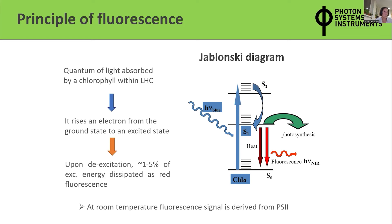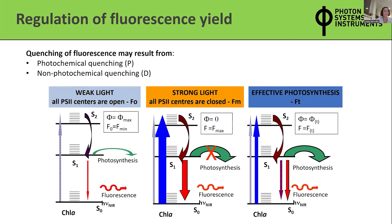Here we have three Jablonski diagrams that show the probability of these processes. The important take-home message is that chlorophyll fluorescence, photosynthesis, and heat dissipation simply depend on the light you use. This can be very cleverly exploited in designing measuring protocols to give you information about the status of your sample.